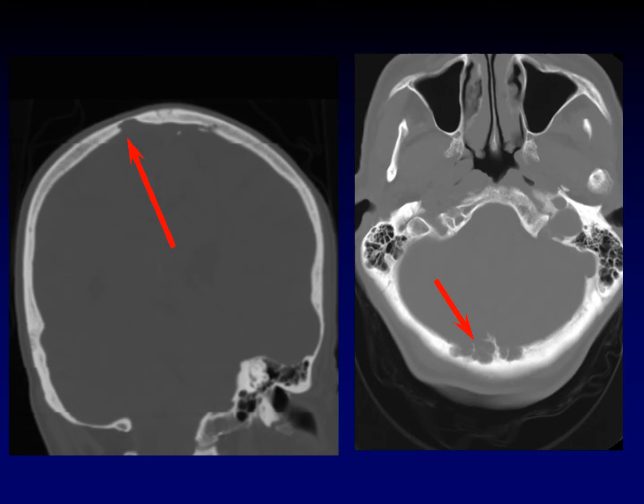These two patients each have lytic lesions along the inner table of the skull — one up at the vertex and one in the posterior fossa. These are two different diagnoses that are often confused, so pause the video and see if you can figure out a name for each of these two lesions.